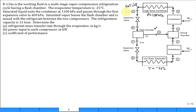That's the pressure at state 6. Saturated vapor leaves the flash chamber at state 9 and is mixed with the refrigerant in the mixing chamber. Saturated liquid continues through the system.